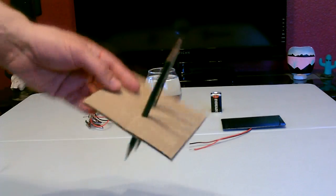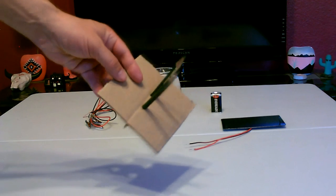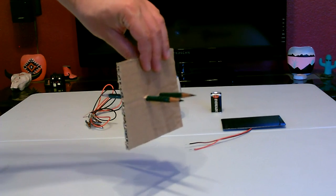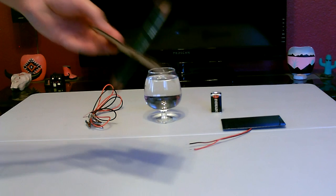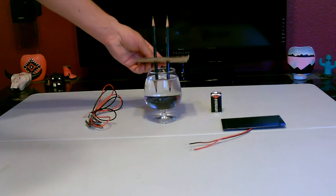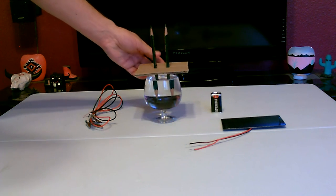This is how the pencils are put together through the cardboard. Space them about an inch apart. Sharpen all four ends and what you do is you drop it into the glass of water. Again that's just tap water.